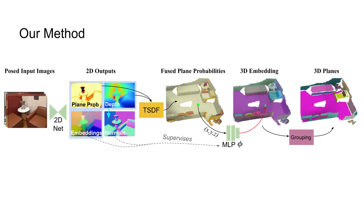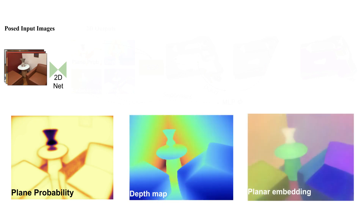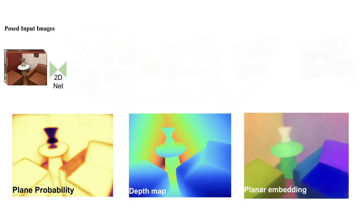We now describe our method in more detail. Given as input a collection of images with associated camera poses, we use a 2D neural network to estimate three different outputs: a plane probability indicating which pixels correspond to planar and non-planar regions, a depth map, and a planar embedding, where pixels with similar embeddings correspond to the same plane.